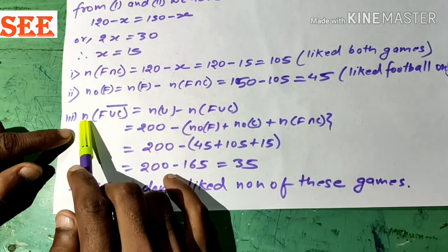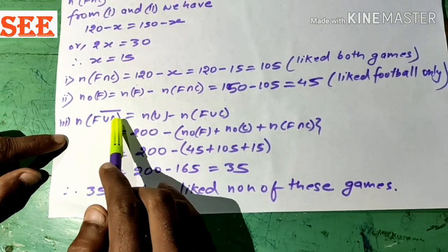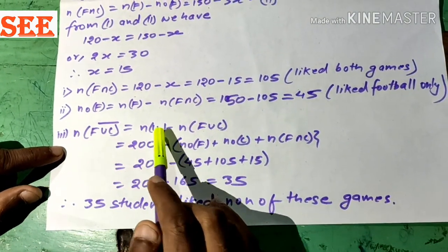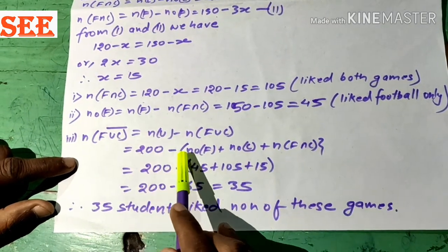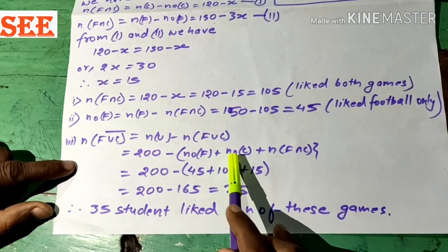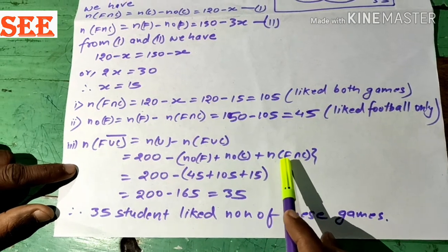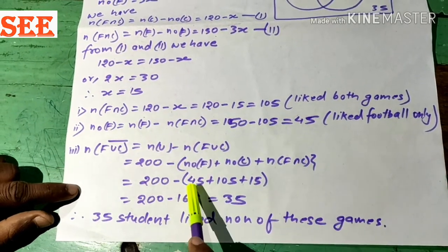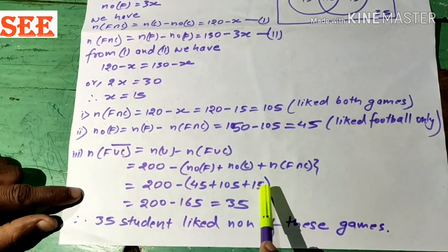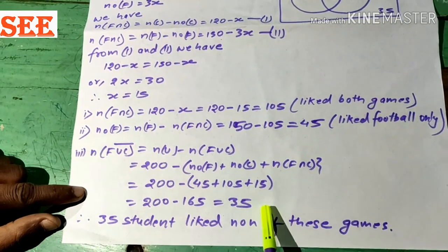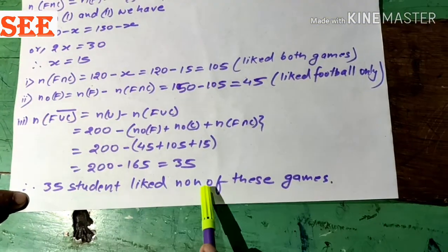Again, n(F ∪ C)' = n(U) - n(F ∪ C). Now, 200 - [n(only F) + n(only C) + n(F ∩ C)] = 200 - (45 + 15 + 105) = 200 - 165 = 35. 35 students like none of these games.